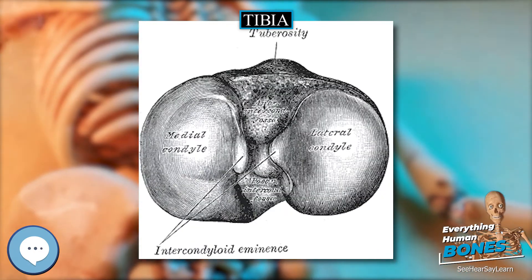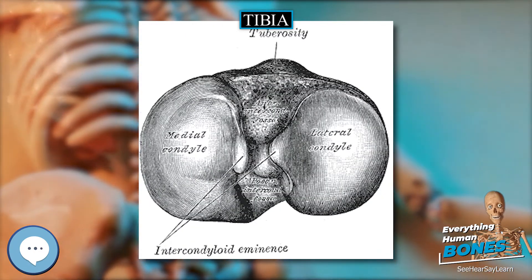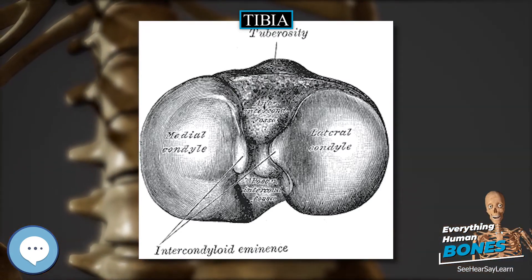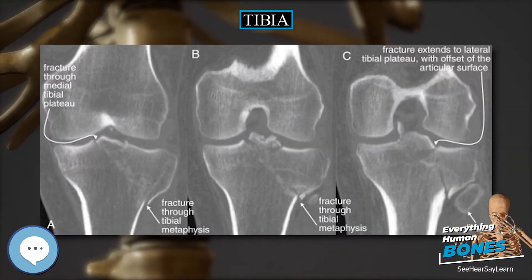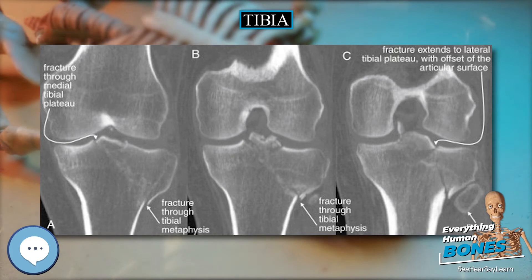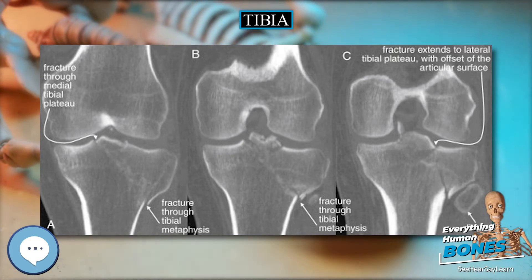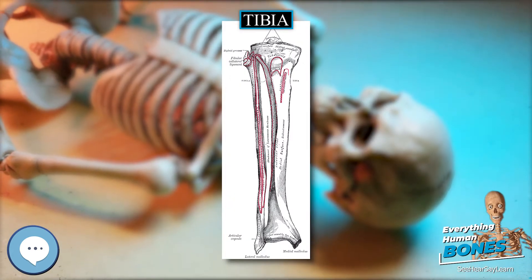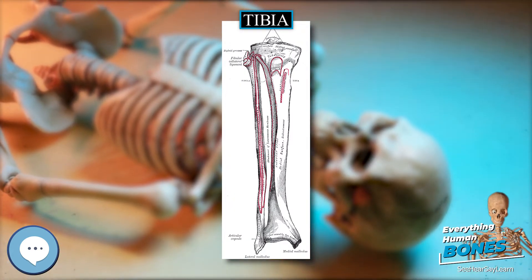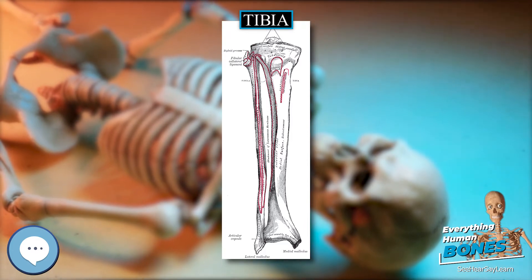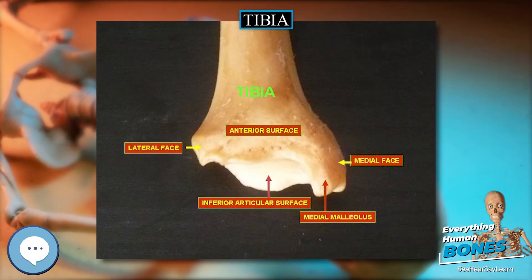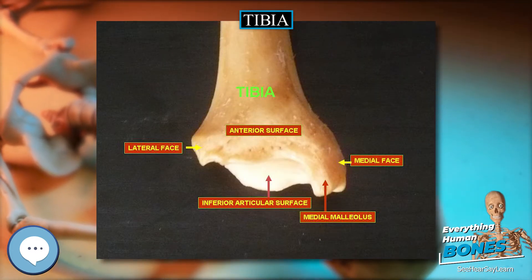On it is an eminence, situated on a level with the upper border of the tuberosity and at the junction of its anterior and lateral surfaces, for the attachment of the iliotibial band. Just below this, a part of the extensor digitorum longus takes origin and a slip from the tendon of the biceps femoris is inserted.